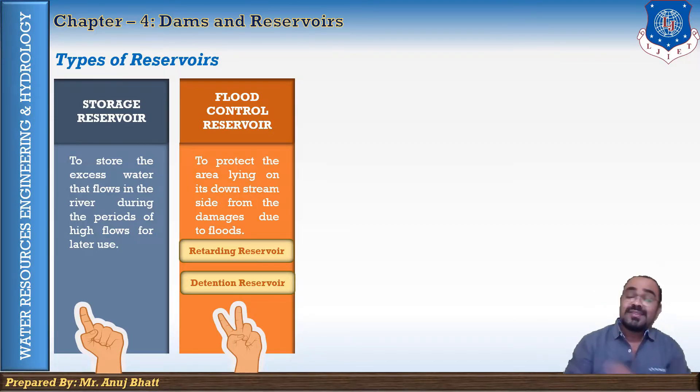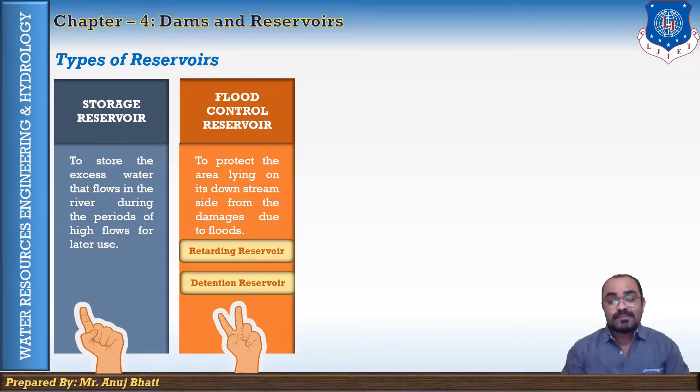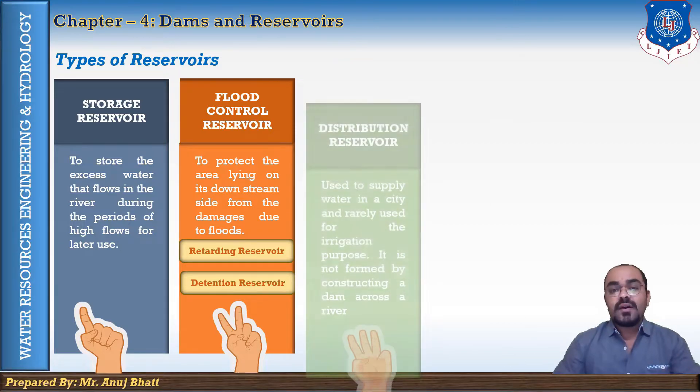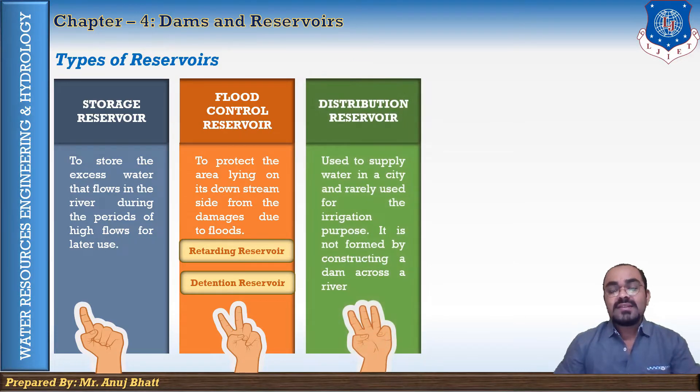There is basically no difference between the detention reservoir and the retarding reservoir, except that the retarding reservoir has a larger spillway capacity and sluiceway capacity to permit rapid drawdown just before or after the flood. Otherwise both reservoirs are the same.